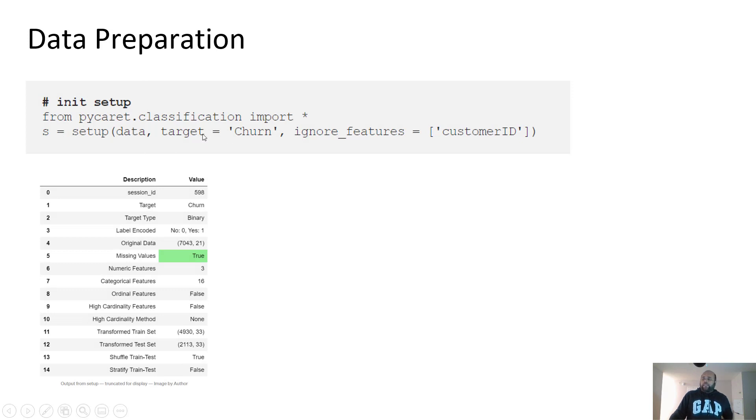To prepare the data in PyCaret, you basically import the module. This is the code you would write in Jupyter notebook or any of your IDE or whatever you are using for Python. You import the classification module, pass the data. This is the data frame called data. Pass the target column. Churn is the name of the target column. And then I'm ignoring customer ID features because I don't want to train models on customer IDs. It's a unique identifier. And you can see we have 7,000 data points. It was divided into two sets, train and test, 5,000 and 2,000. This is how you actually evaluate the performance of your machine learning models.